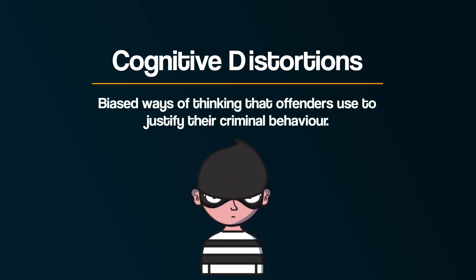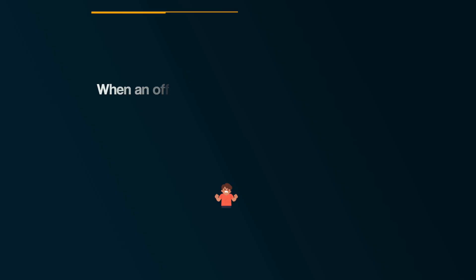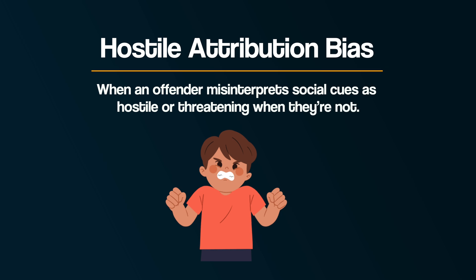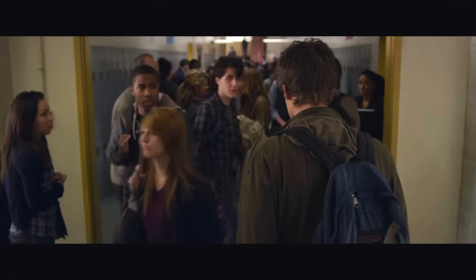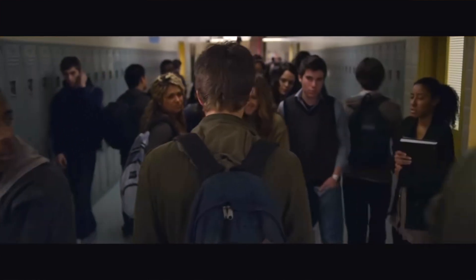First up: cognitive distortions. These are biased ways of thinking that offenders use to justify their criminal behavior. One cognitive distortion is called hostile attribution bias. This happens when an offender misinterprets social cues as hostile or threatening when they're not. For example, imagine someone accidentally bumping into a person in a corridor — if that person has hostile attribution bias, they might wrongly assume it was done on purpose to provoke them.